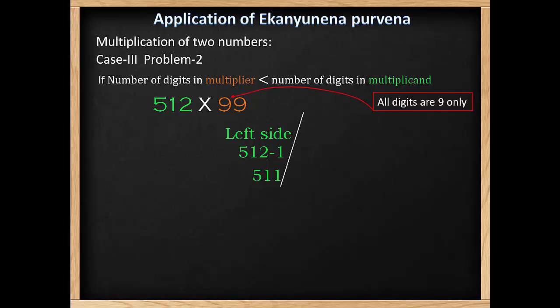Now the right hand side can be found by multiplier minus left side, so it will be 99 minus 511. Since 511 cannot be subtracted from 99, we need a special technique.